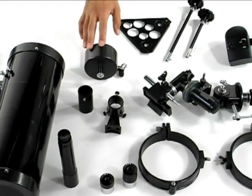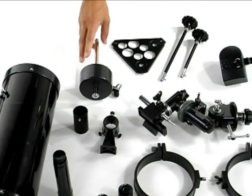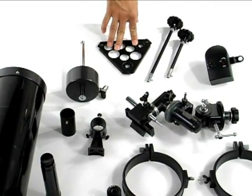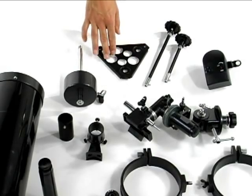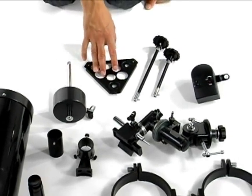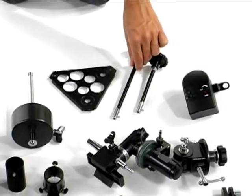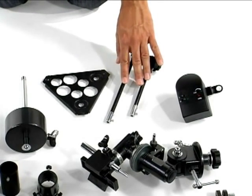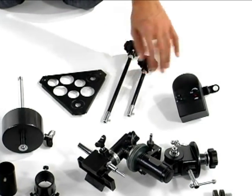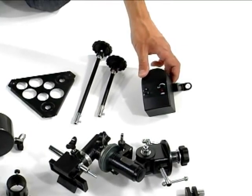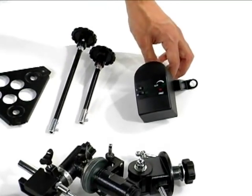This unit right here will be your counterweight. This tray is for your tripod, where you'll put your eyepieces when you're not using them. These are your adjusting cables for when you're tracking your celestial object. This little unit right here is called a motor drive.